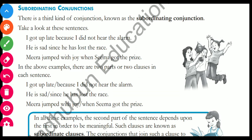Now come to subordinating conjunctions. Subordinating conjunctions join a clause to another on which it depends for its full meaning. A clause joins another clause such that the second clause becomes completely dependent upon the first clause. This is the third kind of conjunction — subordinating conjunction.